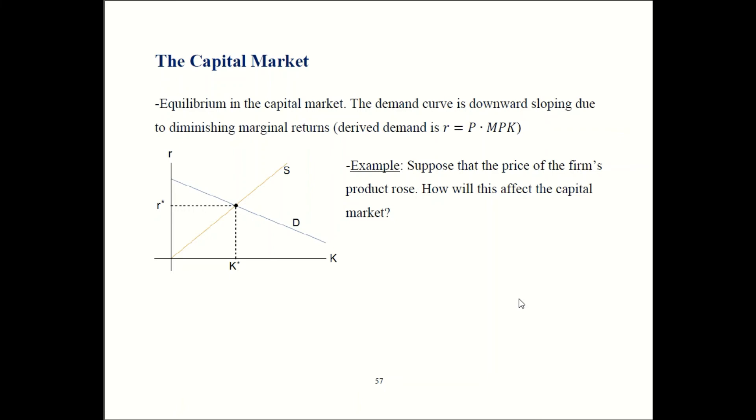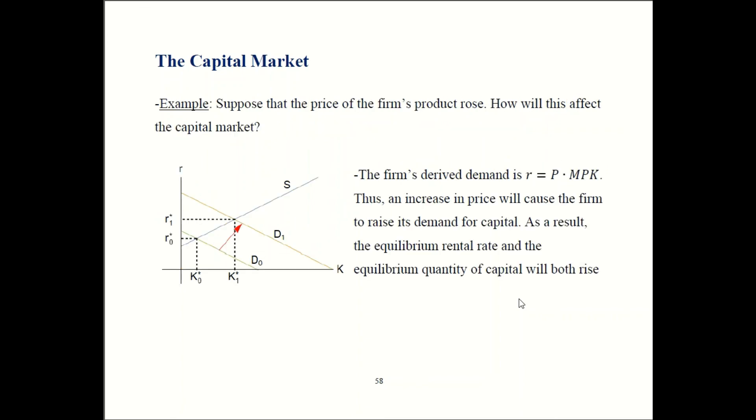Let's work through an example to make sure we understand how this stuff works. Let's say the price of the firm's final product is going up. How is that going to affect the capital market? Go ahead and figure out which curve shifts and which direction and find what happens to R star and also what happens to K star. Pause the video, work through the problem, and then press play when you're done.